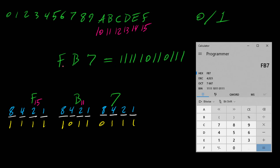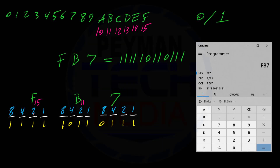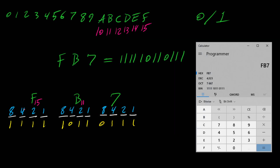Quick recap: every time we want to convert hexadecimal to binary, first separate each hex digit — F, B, and 7. Then put 4 bits per hex digit with decimal values 1, 2, 4, 8. F is 15 so all bits are on; B is 11 so 8, 2, and 1 are on; 7 means 4, 2, and 1 are on. Put them all together for your binary result.